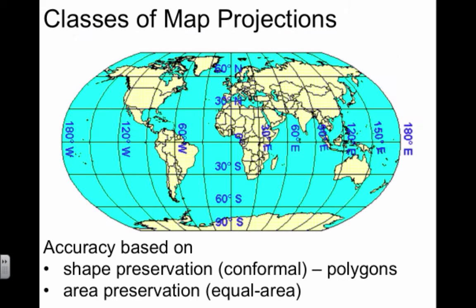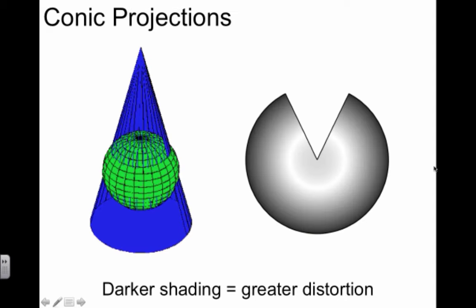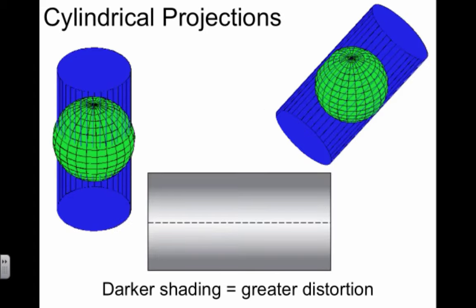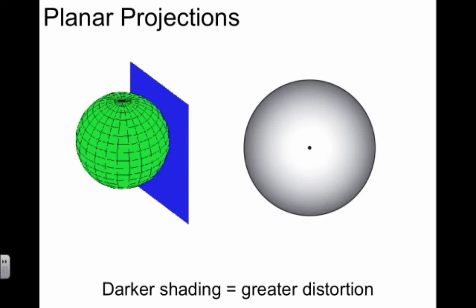The second type of projection is the equal area projection, focused on area preservation. You can see the polygons are distorted, but the shapes and sizes of landforms are much more accurate—that's the purpose. On these different projections, darker shading indicates greater distortion, whether in cylindrical or planar projections.